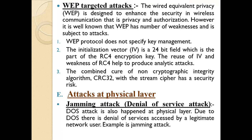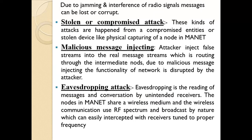Attack at physical layer. Jamming attack: a DoS attack is also executed at the physical layer. Due to DoS, there is a denial of service for legitimate network users — for example, a jamming attack. Compromised attack: this kind of attack happens via a compromised entity or stolen device, such as physical capturing of a node. Malicious message: the attacker injects a false stream into the real message stream routing through intermediate nodes, disturbing the functionality of the network. Eavesdropping: the reading of messages and conversations by unintended receivers. Nodes in MANET share wireless media, and wireless communication uses the RF spectrum and broadcasts by nature, which is easily intercepted by receivers tuned to the proper frequency.